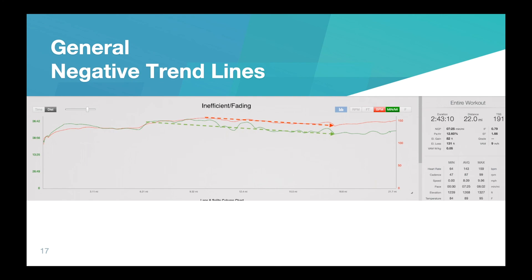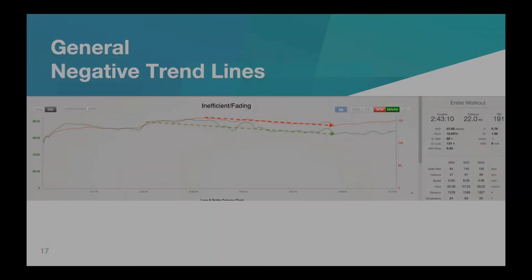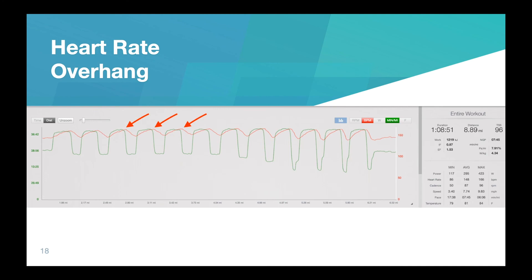Next we're going to look at heart rate overhang. This is a great thing to look at, especially early on when assessing an athlete's readiness to perform, and also their ability to know their body and how fit they are. Looking at this workout, we can see the heart rate overhang well into the recovery period. There's a big difference between the 'on' section of the interval and the recovery section, but keep in mind this is a jog recovery — so we're not going to see as dramatic a drop-off as we'd expect with a walking interval.